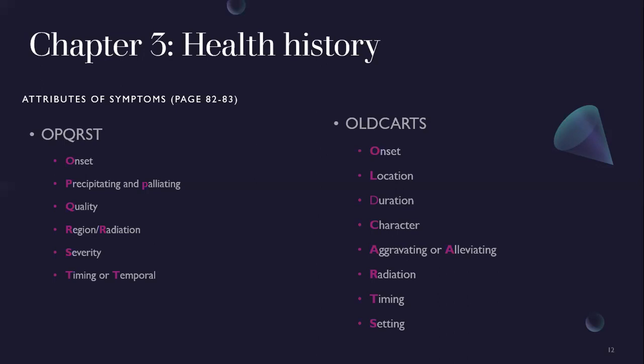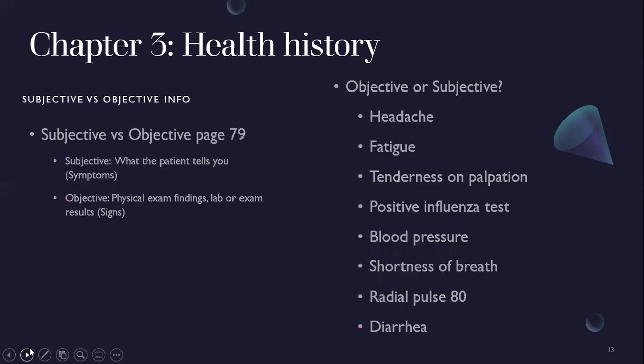Timing: does it come and go or is it constant? Setting: when does it usually occur? Subjective versus objective — subjective is what the patient tells you, those are symptoms. Objective are things you can see: physical exam findings, lab results, things you can actually see. Headache and fatigue are things the patient tells you, so they're subjective.